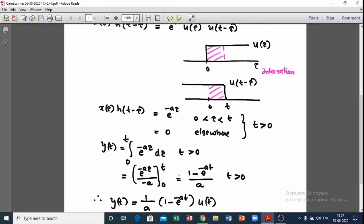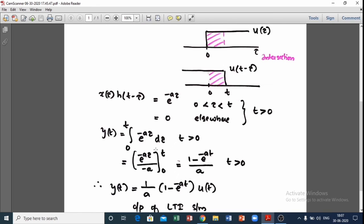The integral of e^(-aτ) from 0 to t evaluates to (1-e^(-at))/a, for t greater than 0.